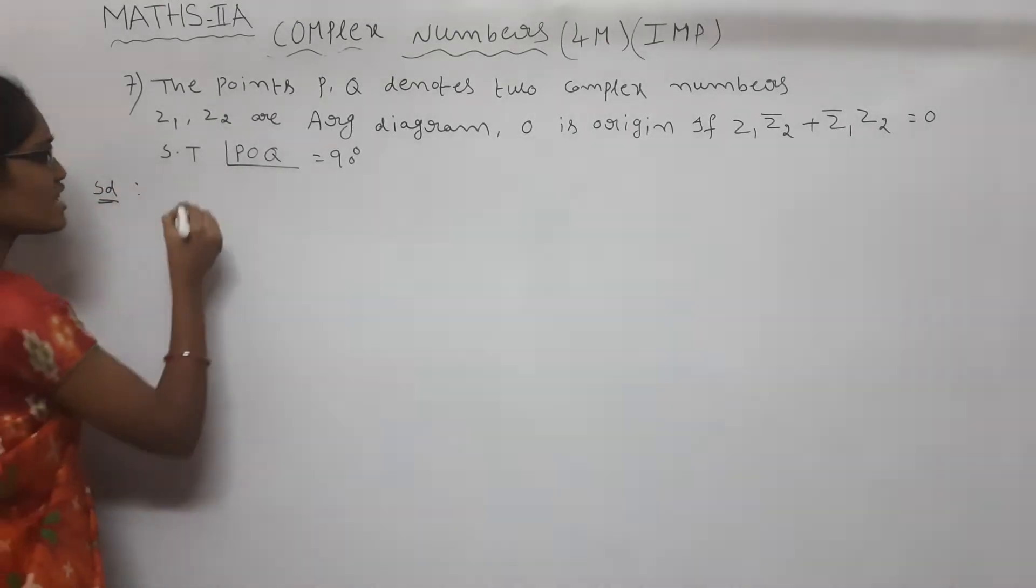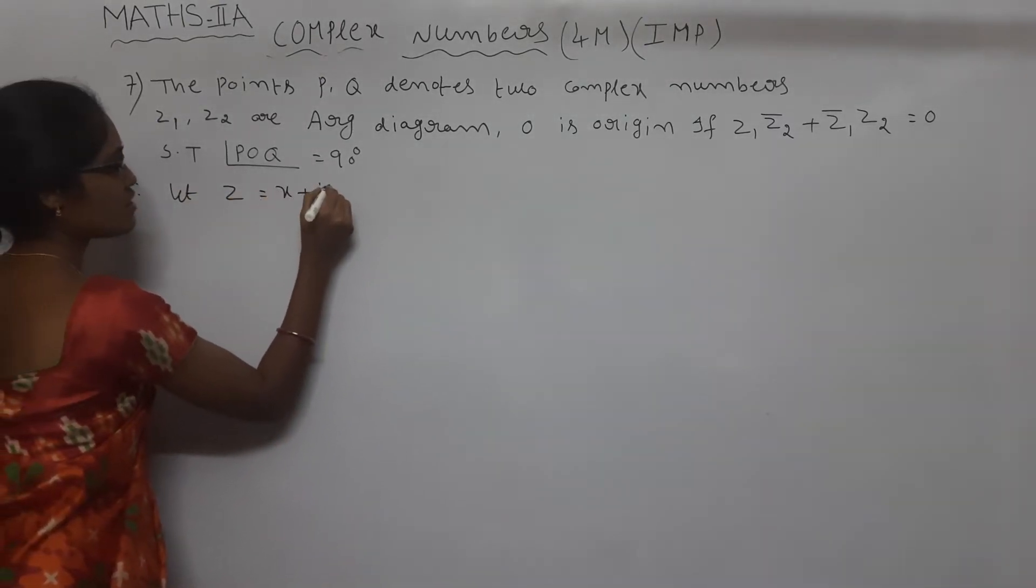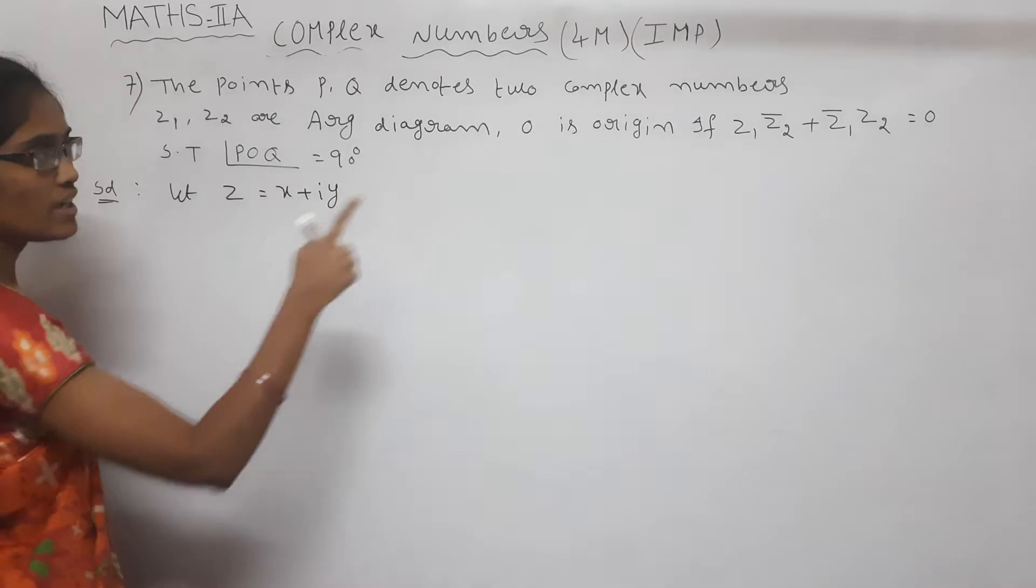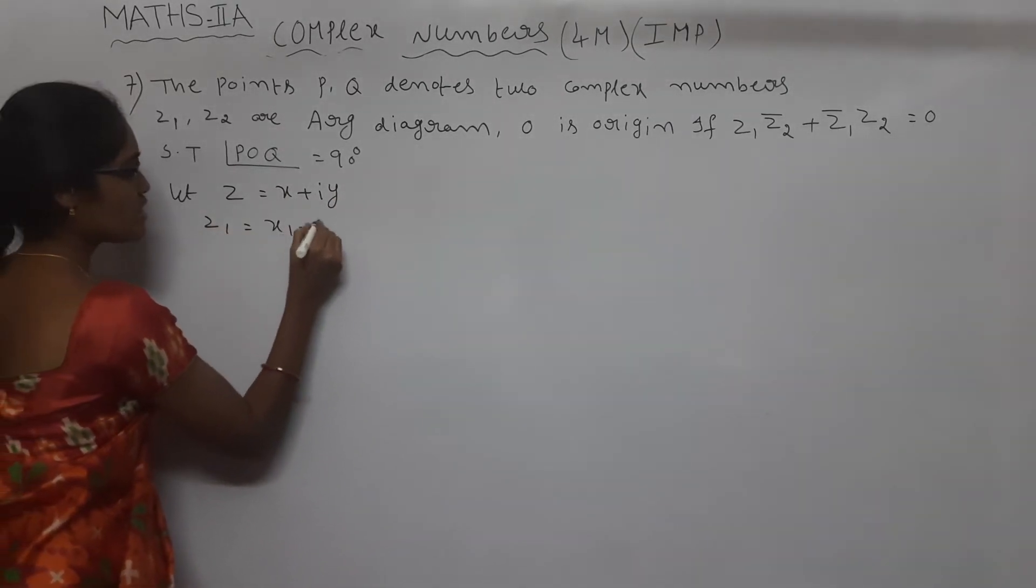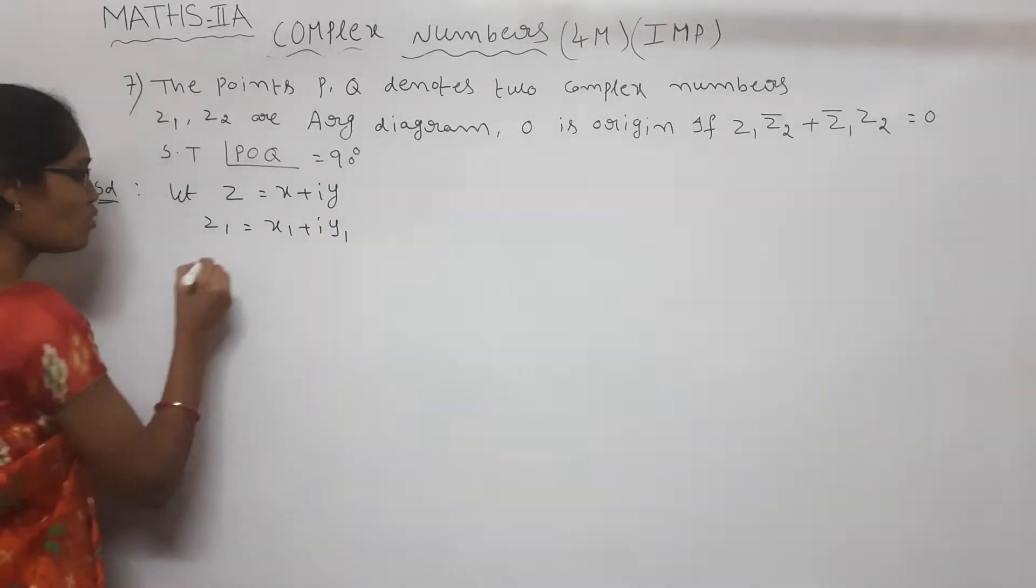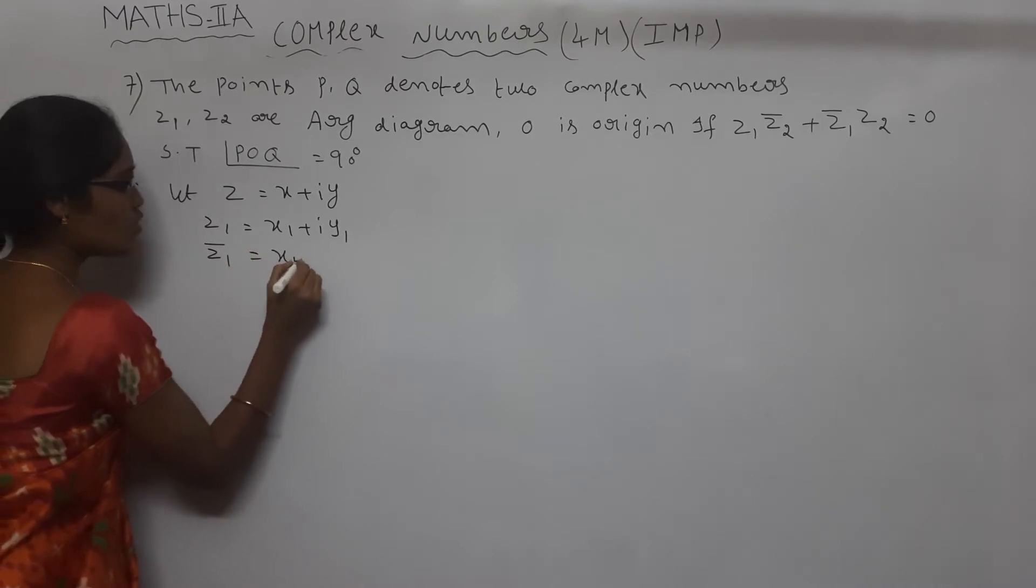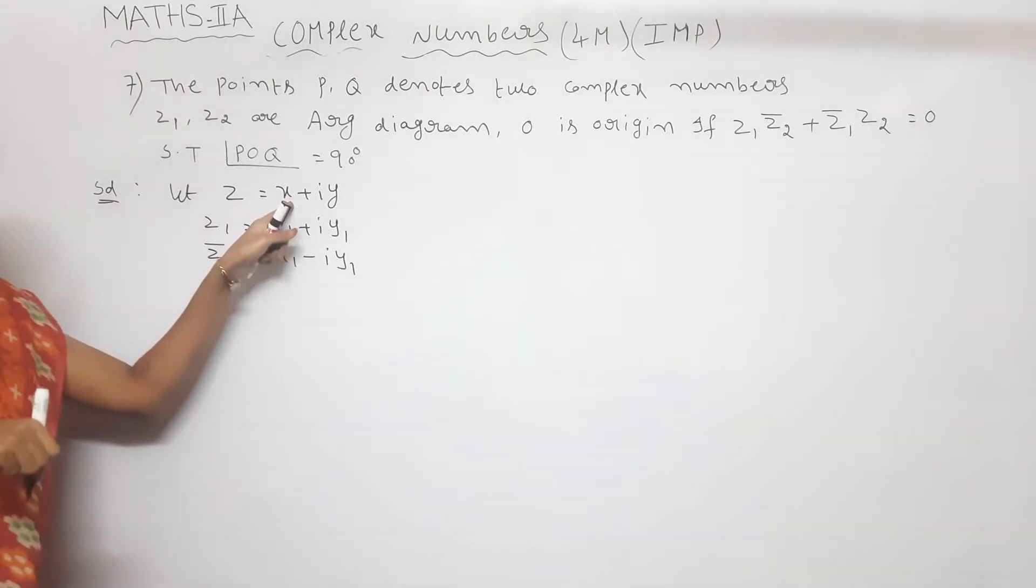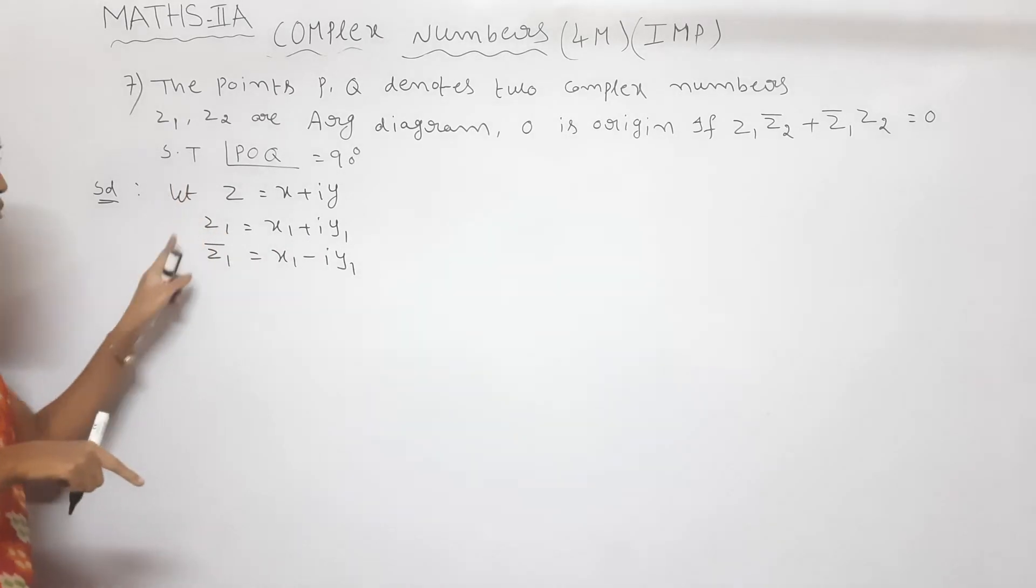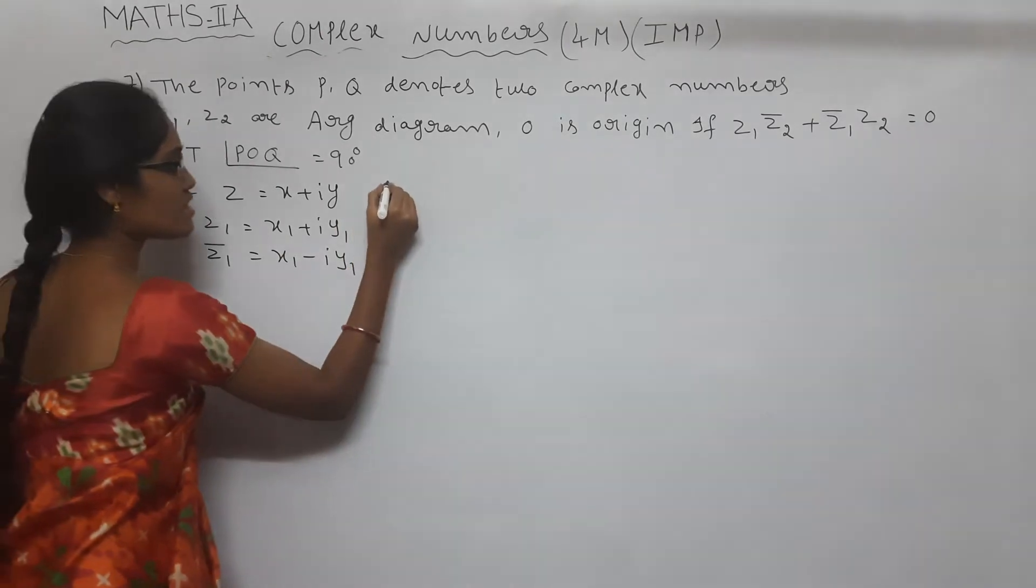Here, consider let Z is equal to X plus iY. Now Z1 is equal to X1 plus iY1. Now Z1 bar is equal to X1 minus iY1. Remember this: Z is equal to X plus iY is our consideration. Z1 is equal to X1 plus iY1, Z1 bar which is X1 minus iY1. Similarly,